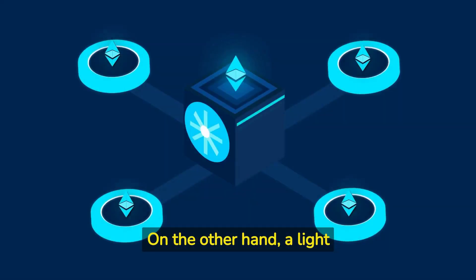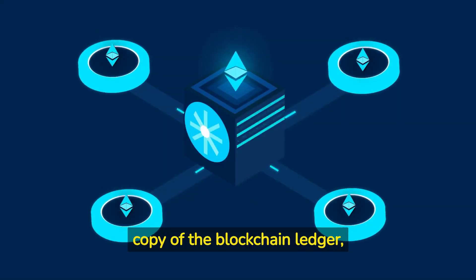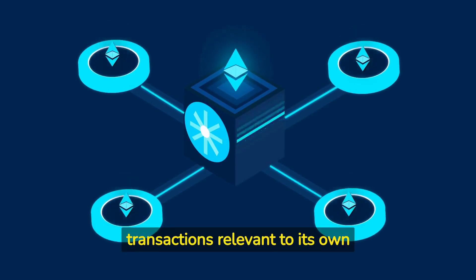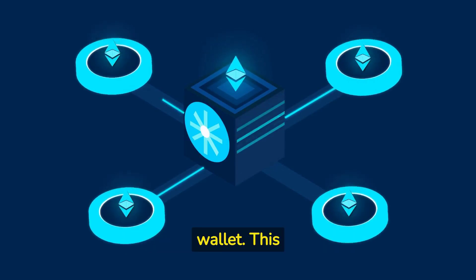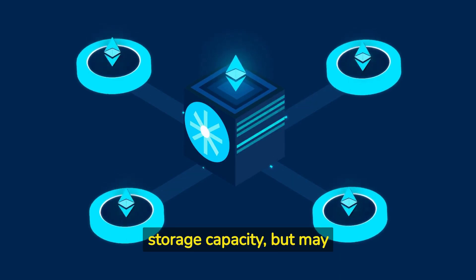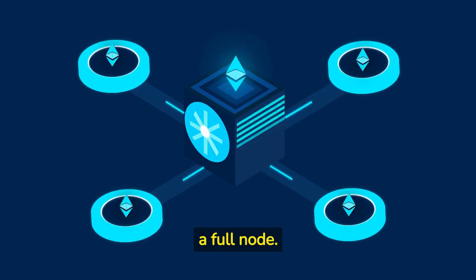On the other hand, a light node does not store a complete copy of the blockchain ledger, but only verifies the transactions relevant to its own wallet. This requires less computing power and storage capacity, but may not provide the same level of security and decentralization as a full node.